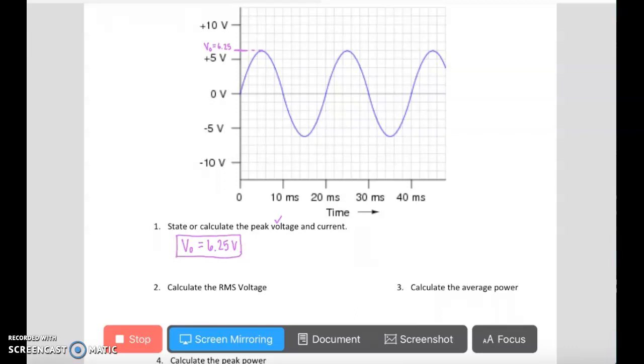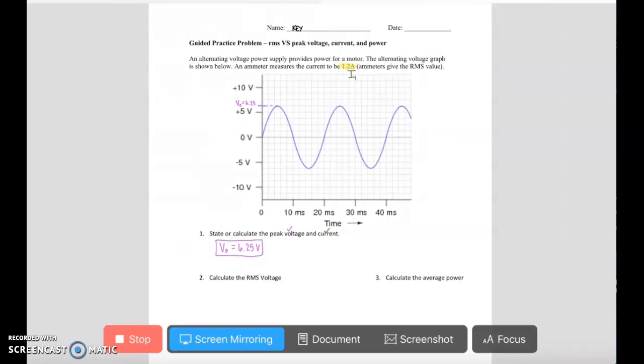Next up, we're also asked to find the peak current or the maximum current. Now we are given the IRMS as 1.2 amps. And so I'm going to use that RMS current in order to find my peak current.